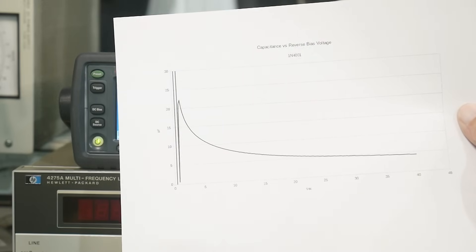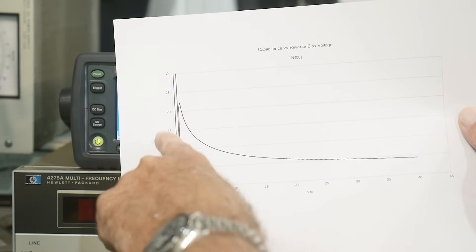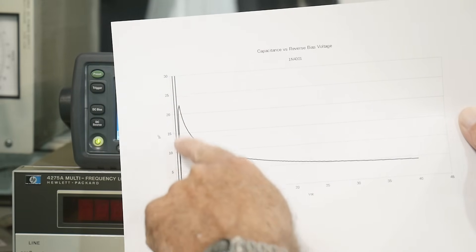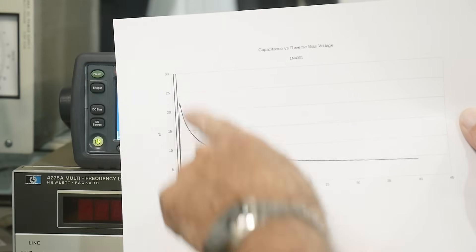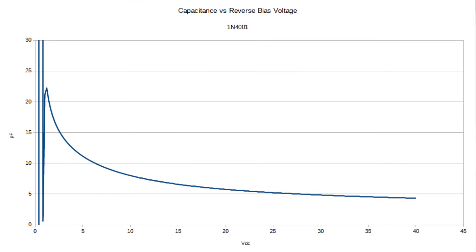So here is a plot. So this is 0 volts to 40 volts, and this is picofarads 0, 5, 10, 15, and 20. So when we have one volt, it doesn't work below a volt. You need at least one volt of biasing. I found that out with this diode. You need at least one volt of biasing before the thing works, before it becomes a capacitor. And we're up here around 22 picofarads.